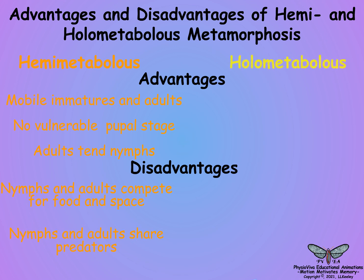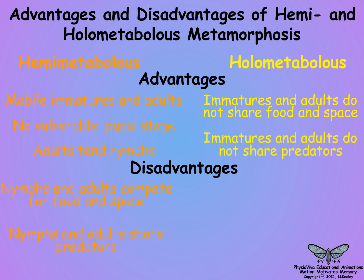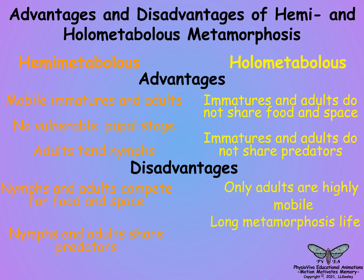In the case of holometabolous insects, the advantages are that adults and larvae do not compete for resources such as food and environment, and they do not share common predators. The disadvantages are that only the adults are highly mobile, immatures require a long period for metamorphosis to adults, whereas adults have a comparatively short life for reproduction.